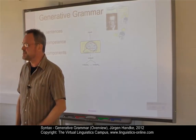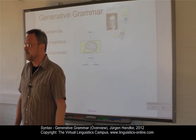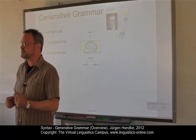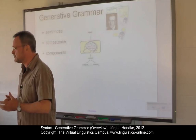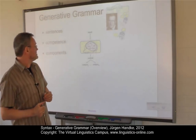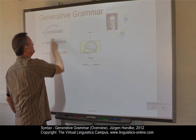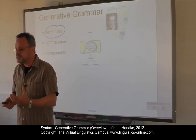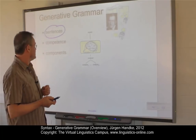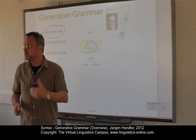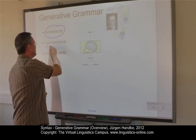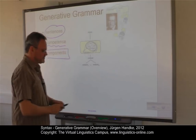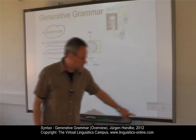From the mid-1950s onwards, the American linguist Noam Chomsky established a number of objectives which have continued to direct the course of linguistic research to the present day. Central to Chomsky's approach is the notion of the well-formed sentence. Any theory capable of producing well-formed sentences and rejecting ill-formed sentences is referred to as generative grammar. We will look at sentences first, then at the notion of competence, and finally at the components of generative grammar.